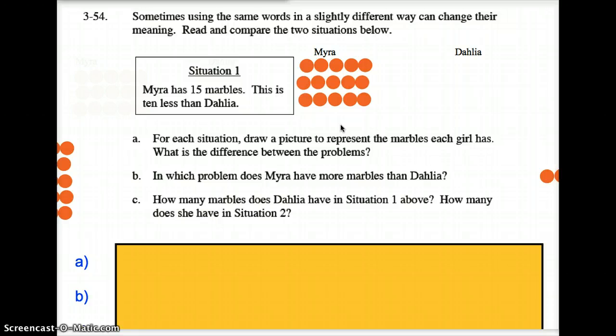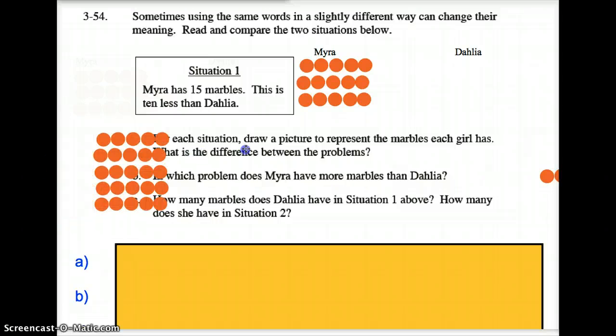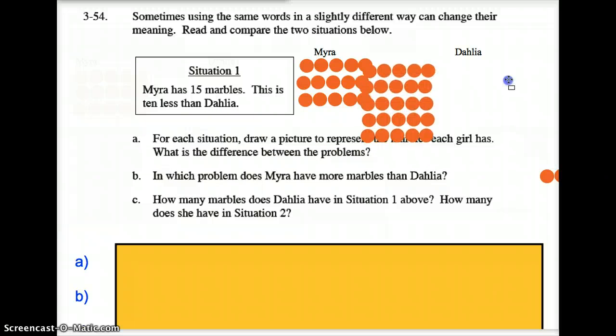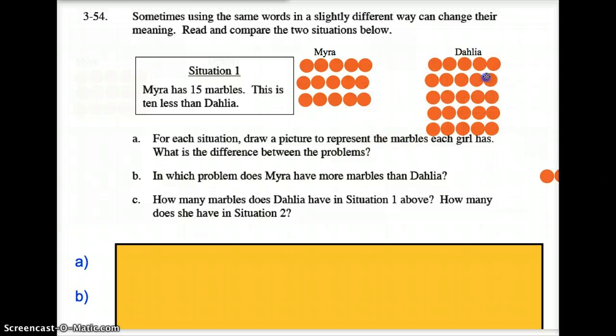So the question is, how many does Delilah have? Well, if this here is 10 less than Delilah, then Delilah must have more marbles than Myra. If Myra's is 10 less than that, that means Delilah must have a grand total of 25 marbles. Hopefully that makes good sense to you.